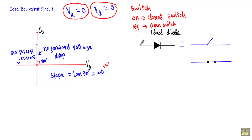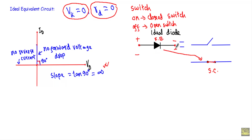Since there is no internal resistance and no built-in potential, current flows through the diode at the same instant we apply the voltage. The vertical line on the IV curve produces an angle of 90 degrees, so the slope equals tan(90°) = infinity. For the ideal equivalent circuit: if the diode is in forward bias — with higher potential at the anode and lower at the cathode — the diode is replaced by a short circuit or closed switch. If the diode is in reverse bias — with negative terminal at the P-side and positive at the N-side — the ideal diode is replaced by an open switch or open circuit.